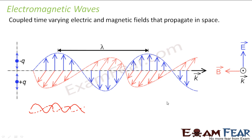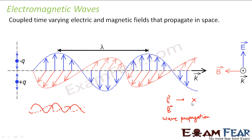The electric field, magnetic field, and the wave propagation direction are all perpendicular to each other. If the electric field is along the x-axis and the magnetic field is along the y-axis, then the wave will propagate along the z-axis. So the electric field and the magnetic field will be perpendicular to each other as well as perpendicular to the direction of wave propagation. So electric and magnetic fields, which are time-varying and coupled to each other, give rise to an electromagnetic wave.